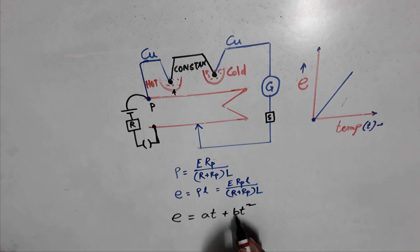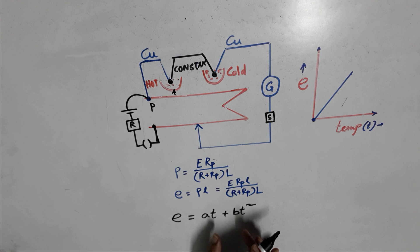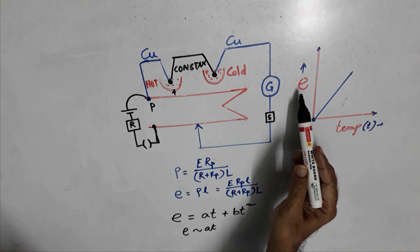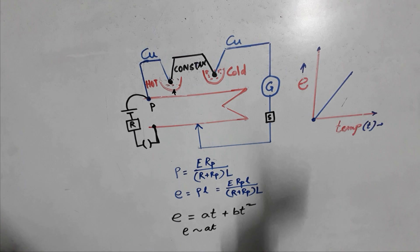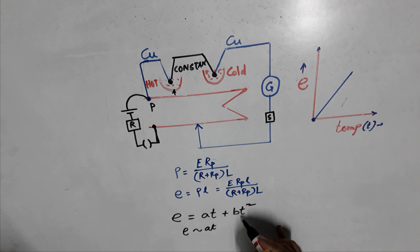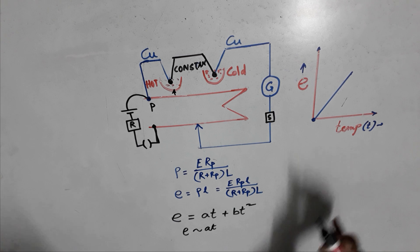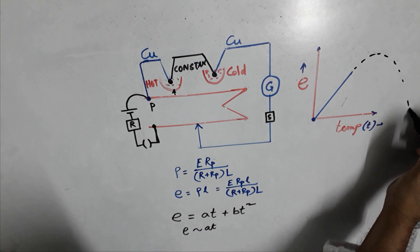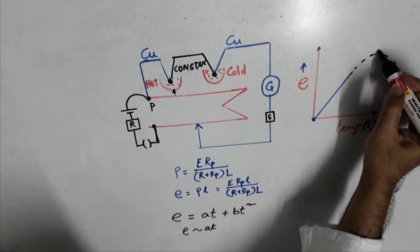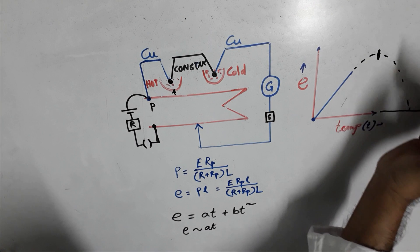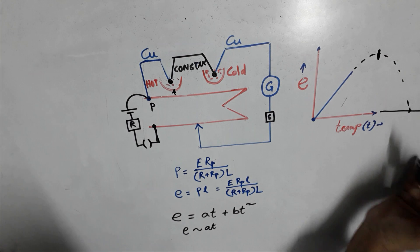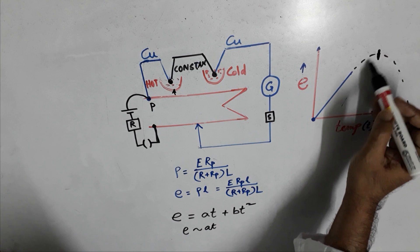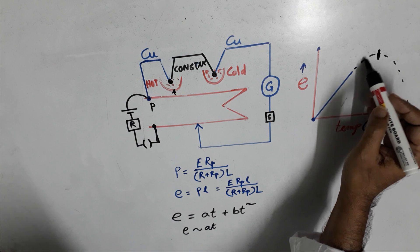The relation between thermo EMF and temperature difference t (with cold junction at 0°C, so t = T − 0 = T) is: e = at + bt², where a and b are constants. For very small temperature differences this approximates to e = at, giving a straight line. The actual curve shows a maximum at the neutral temperature, beyond which lies the temperature of inversion.